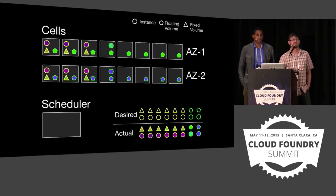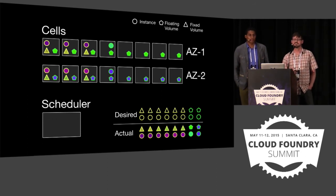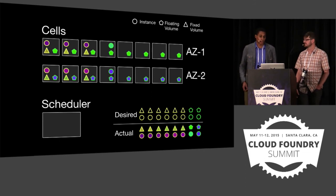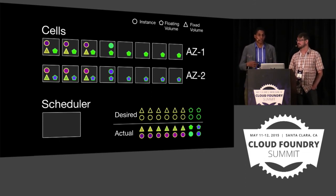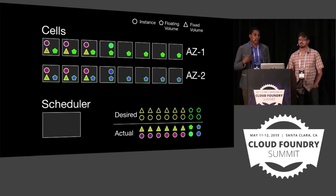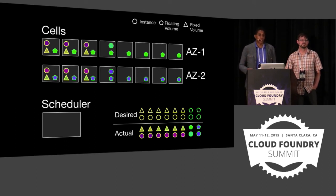How do you make those volumes float — is it through NFS or something else? That depends on what you as a cluster infrastructure provider want to offer. You could have floating volumes implemented with NFS, with Ceph, or with an EMC appliance. It's really up to you and your organization to decide what's the right fit. The volume manager is the part of the cell that encapsulates all of that platform-specific stuff and hides it from developers who don't really care.